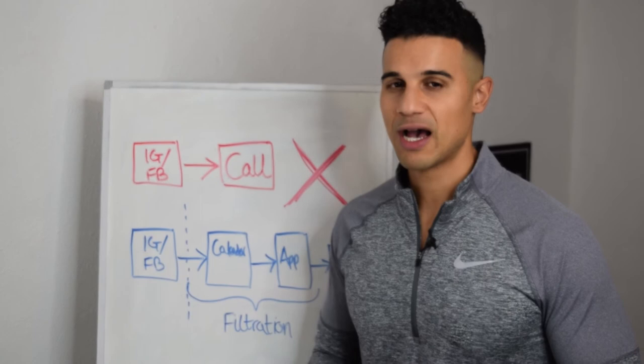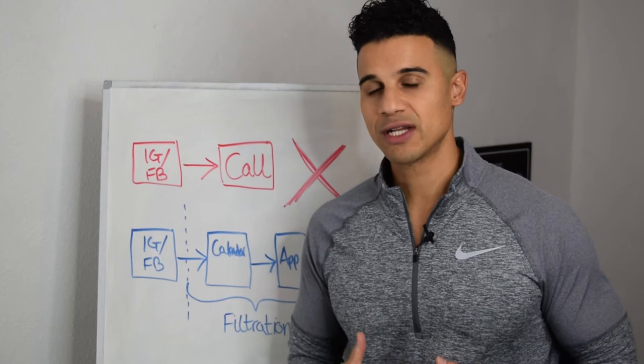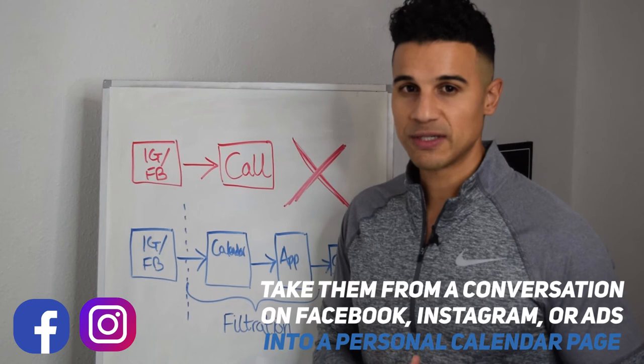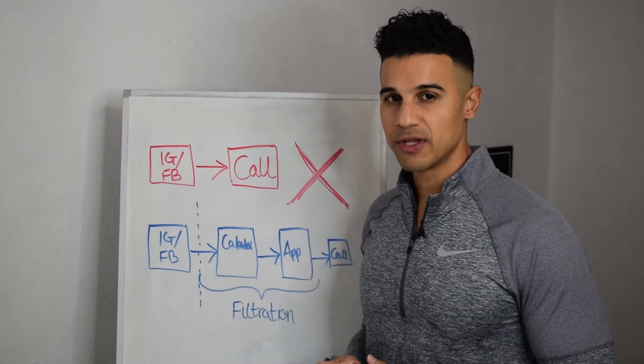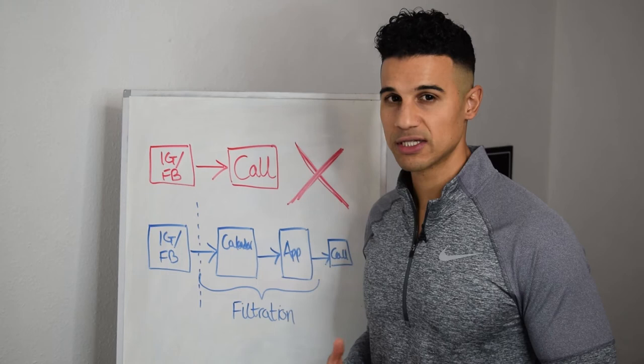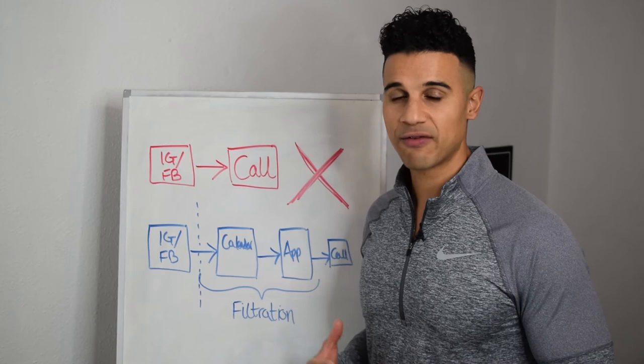So what we do and what we teach trainers inside the Personal Trainers Elite Academy is this: Take them from a conversation on Facebook or Instagram or an ad if you're running ads to a personal calendar page. So this is a calendar that's linked up with your life. So Google Calendars is great for this because it can sync up with all the other things that you have, maybe client sessions, personal stuff, every important thing going on and they can book a time in and around your other schedule, right?